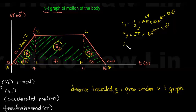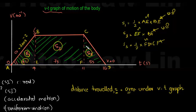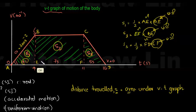S3 is the area of triangle CDF, with CH and FD as the relevant sides and CF as the base. Combining S1, S2, and S3 gives the total distance. The individual solutions for S1, S2, and S3 are calculated separately.